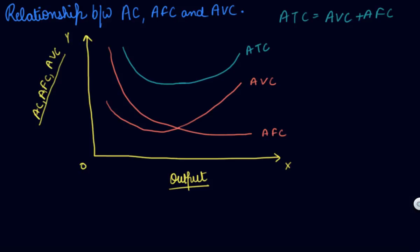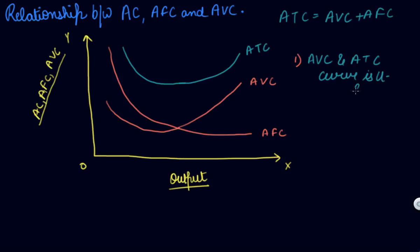Number one: both the AVC curve and the ATC curve are U-shaped. That is, your AVC and your ATC curve are U-shaped.